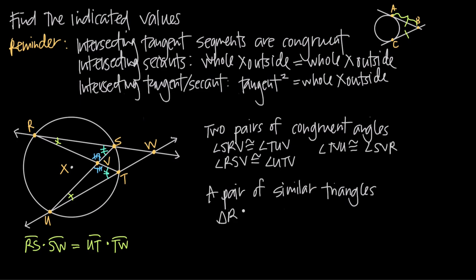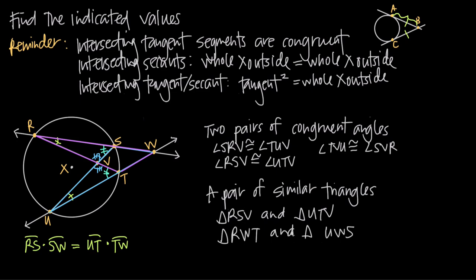We already know that triangle RSV and triangle UTV are similar triangles. But we also have a second set of similar triangles when we have two intersecting secants — this will always be the case. If we identify triangle UWS — from U to W, W to S, and S back to U — this triangle is similar to triangle RTW, from R to T, T to W, and W back to R. These two larger triangles are also similar: they won't necessarily be the same size, but they share the same three interior angle measures. So triangle RWT and triangle UWS are similar triangles.